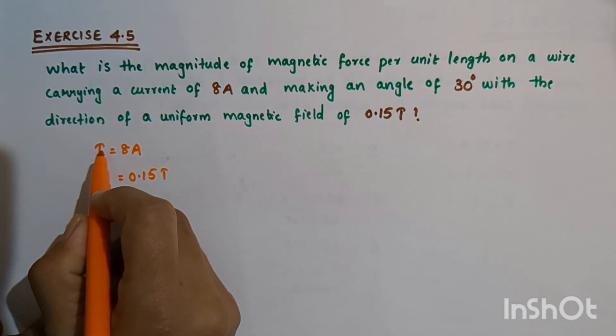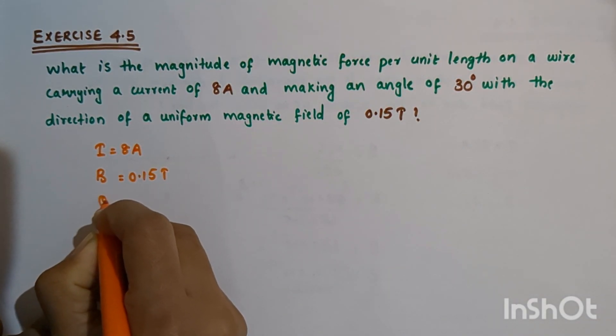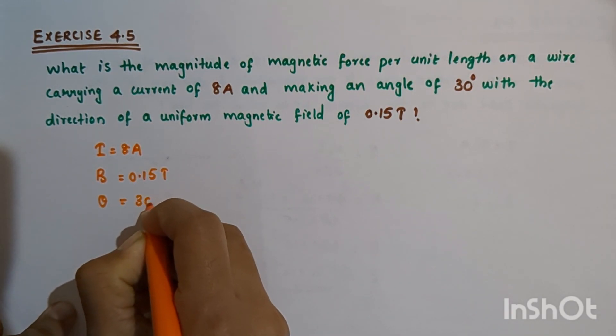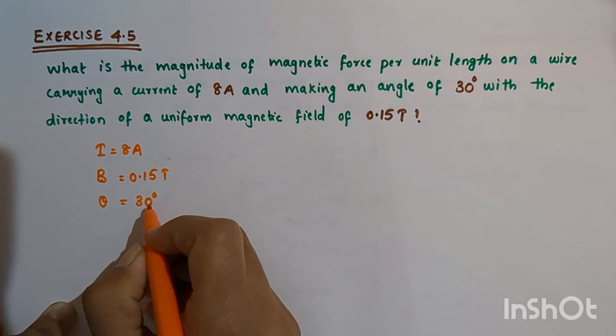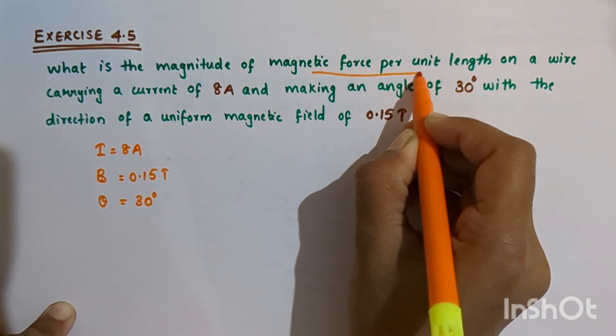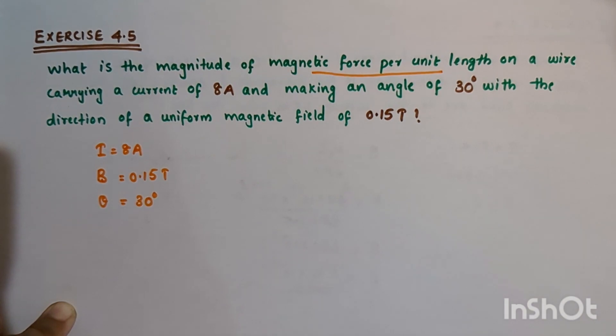This current carrying wire makes an angle theta, which equals 30 degrees, with the magnetic field B. We want to get the value of magnetic force per unit length on this wire.